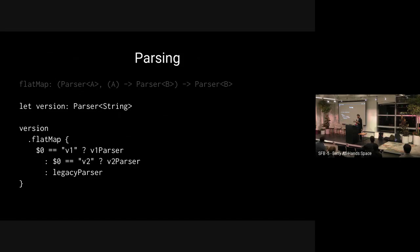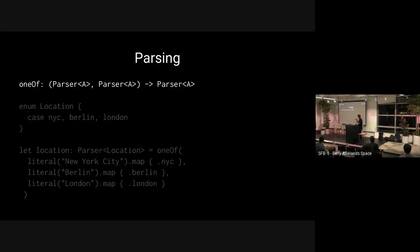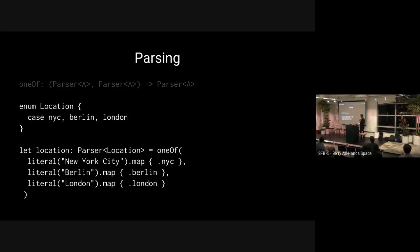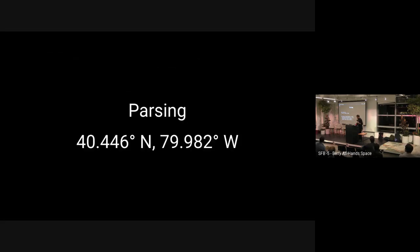For example, at the beginning of a string you might have a version indicator. Parse the first two characters to get the version, and then decide: if it's v1, use the v1 parser; if it's v2, use the v2 parser; otherwise use the legacy parser. You can also combine two parsers by trying the first and, if it fails, trying the second. You could try parsing the literal string 'New York City' and map to the NYC location, or try 'Berlin' or 'London'.